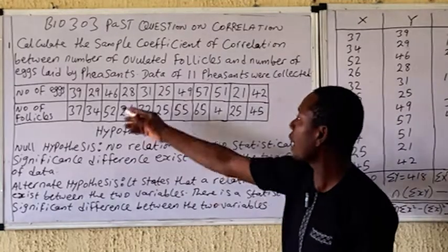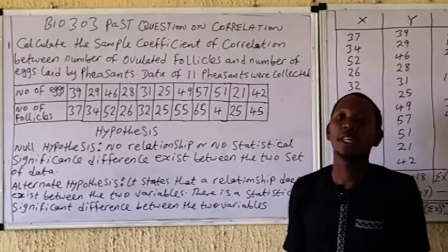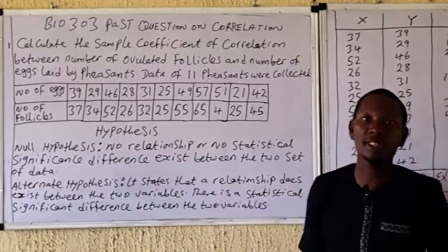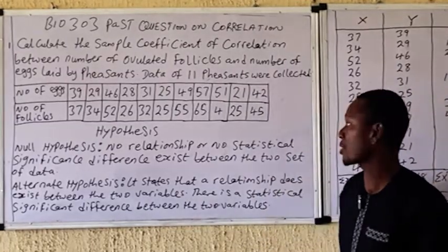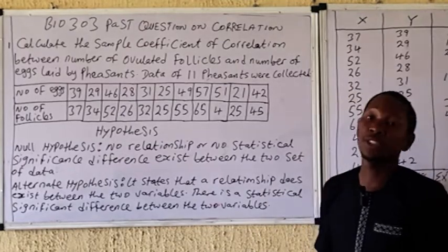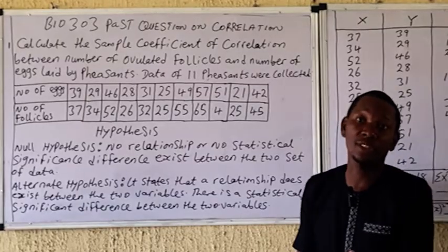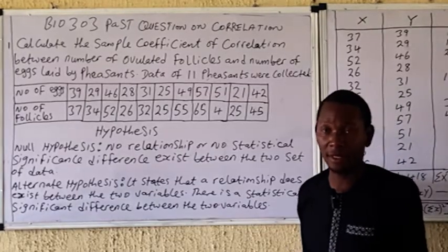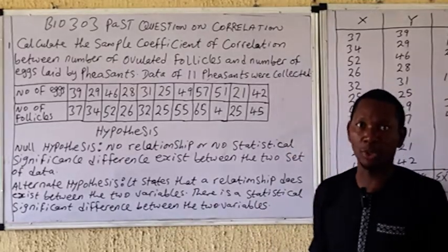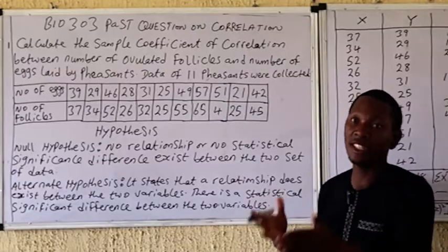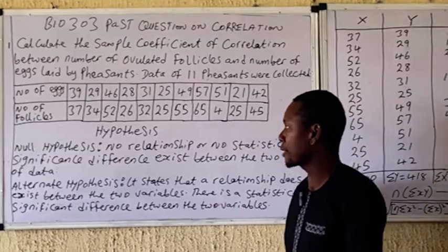The first thing you do, as usual, is to state your hypothesis. We have two types: the null hypothesis and the alternate hypothesis. The null hypothesis states that there is no relationship between the two variables — no significant difference exists between them. The alternate hypothesis states that there is a relationship, i.e., there is a statistically significant difference between the variables.